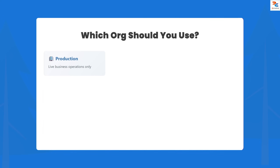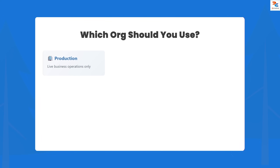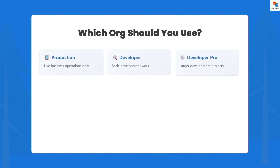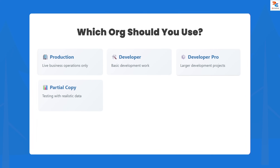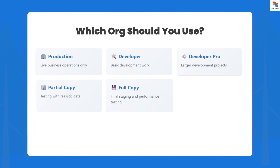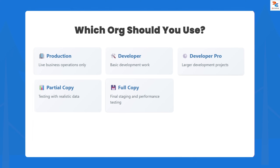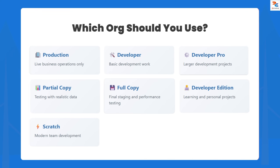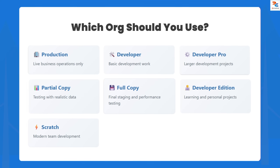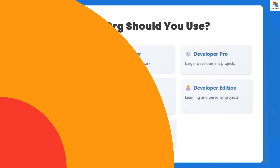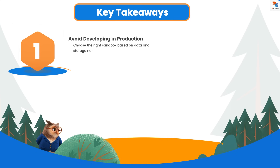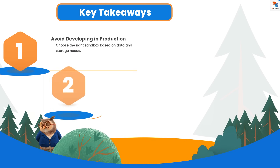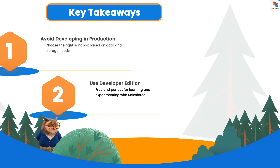Quick recap — when to use each: production org for live business only; developer sandbox for basic development; developer pro for larger development projects; partial copy for testing with real data; full copy for final staging as a production replica; developer edition for learning and personal projects; scratch orgs for modern team development with CI/CD or Git workflows; demo orgs for showcasing features.